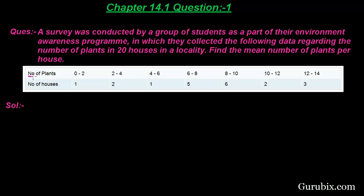In this table, the first row is number of plants, which is given in the form of intervals: 0 to 2, 2 to 4, 4 to 6, 6 to 8, 8 to 10, 10 to 12, and 12 to 14.